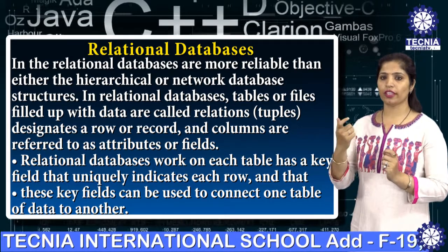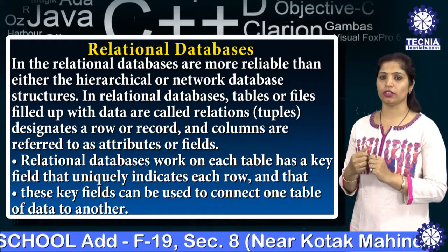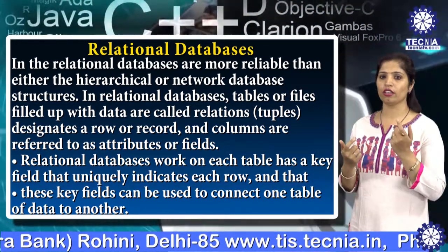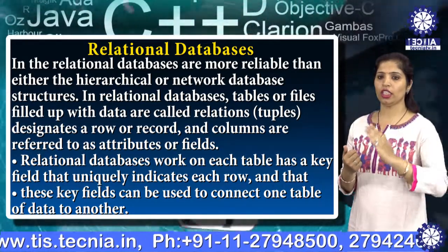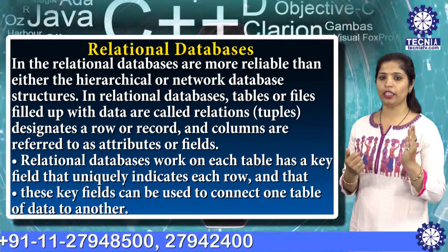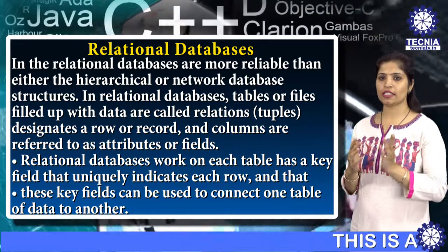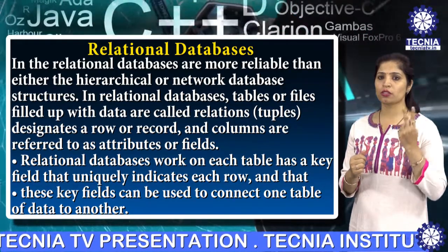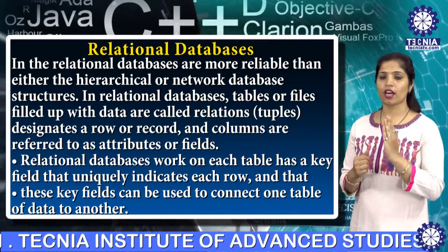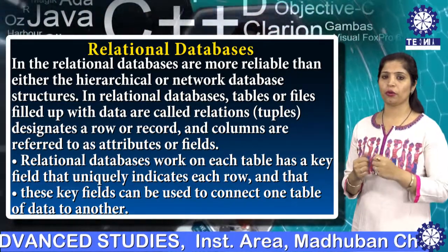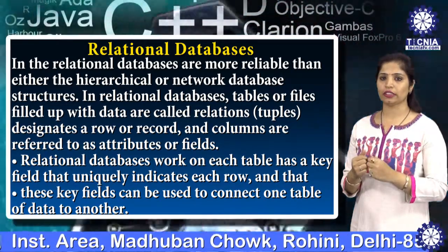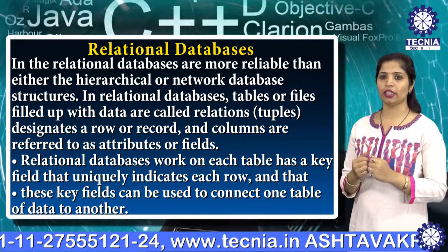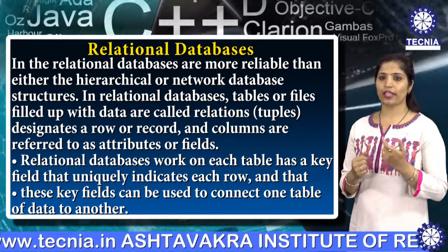Relational databases are more reliable than hierarchical or network database structures. In the relational database, tables or files filled with data are called relations, also called tuples, which designate a row or record, and columns are referred to as attributes or fields. Each table has a key field that uniquely identifies each row, and these key fields can be used to connect one table of data to another. The relational database has two major reasons for use: first, it can be used with little or no training because it uses tables, and second, database entries can be modified without specifying the entire body of a particular table.